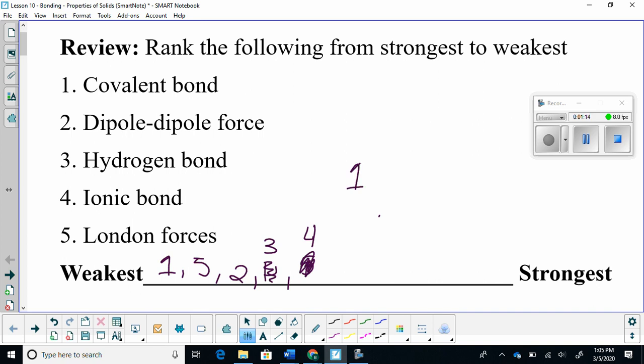So the final answer is one, five, two, three, four. So a covalent bond, those are much easier to break. They boil at very low temperatures.